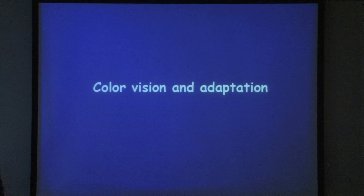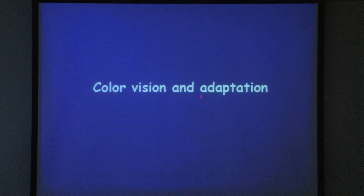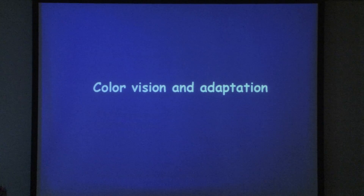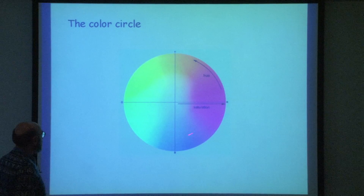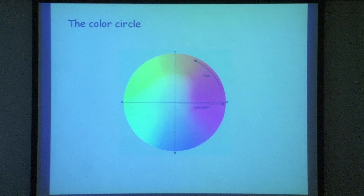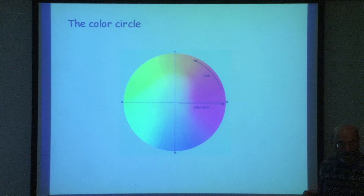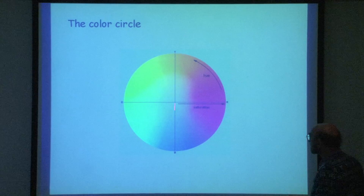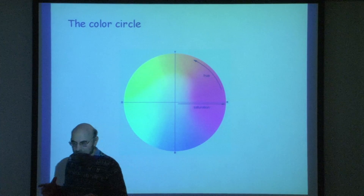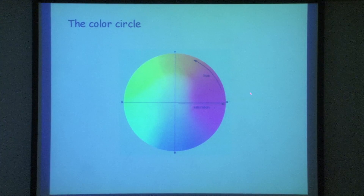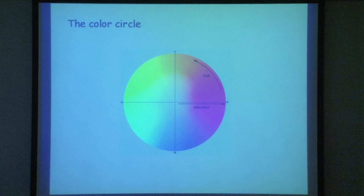Moving to color vision and adaptation: Newton invented the color circle, which arose from the observation that we don't have opposites — no yellowish blue or reddish green. Anything that's not an opposite on the color circle does exist, such as yellowish red or yellowish green. When you adapt the eye to yellow and shift to white, the afterimage is blue; if you adapt to red, the afterimage is green. The color circle perfectly predicts afterimages due to selective bleaching of the three cone types.